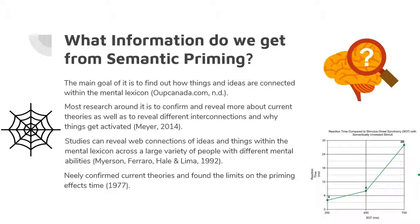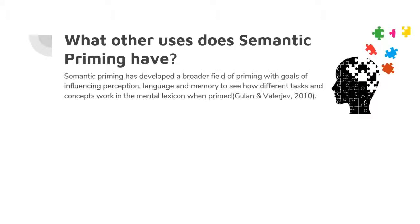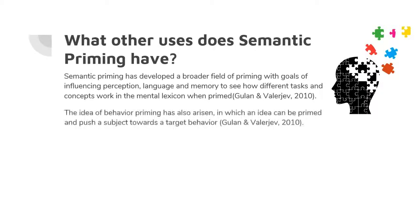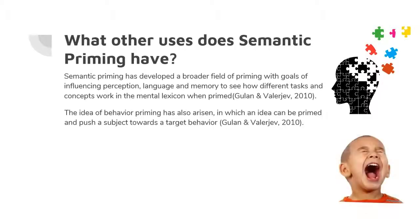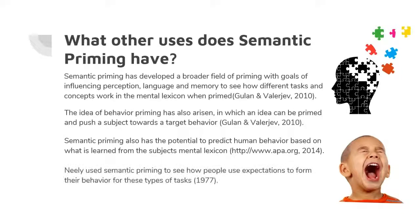Neely's study also found the limit on how long the priming effect lasts. Semantic priming, and the overall concept of priming, has led to many different end goals, including perception, language, and memory — all aimed at seeing how different tasks or concepts work in the lexicon when primed. The idea of behavior priming has also arisen, in that a person can be primed to act a certain way by giving them a primer, action, or idea. Semantic priming also has the potential to predict human behavior based on the structure of their lexicon, and Neely found that people use expectations to form their behavior in tasks like these.